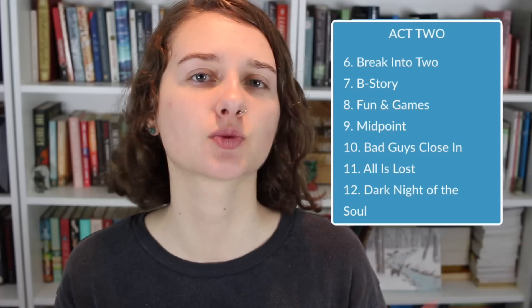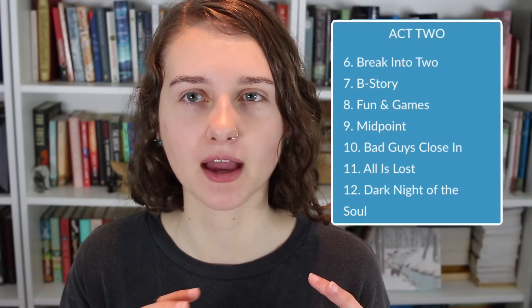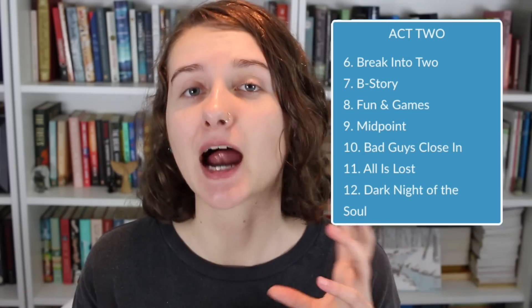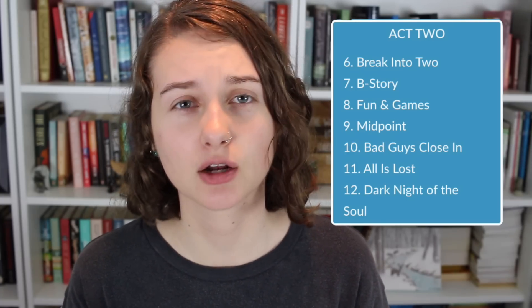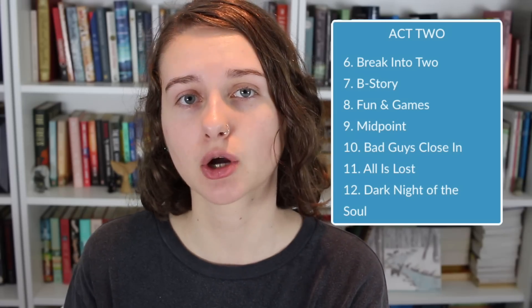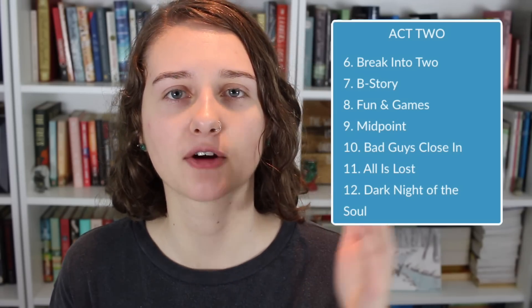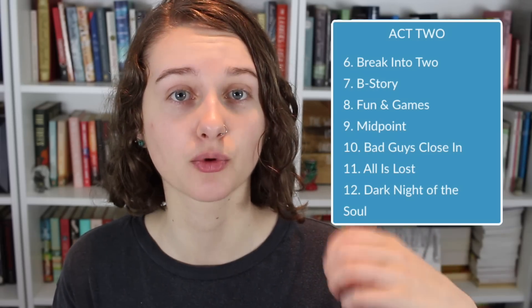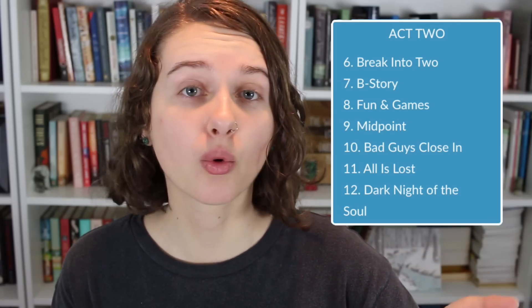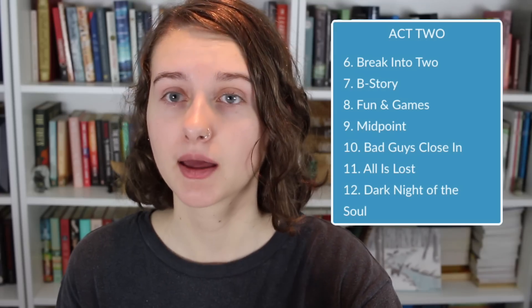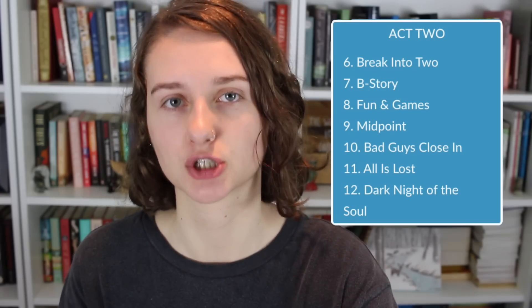After that is the longest beat in the story and that's the promise of the premise, also sometimes known as fun and games. Fun and games is where we see the premise play out — basically when you read the back jacket, what you think the main conflict of the story is going to be. That plays out in the promise of the premise. After that is the midpoint, which is basically a turning point. The midpoint is often either a moment of false hope or false defeat. If it's false hope the character will think they've achieved their goal but then realize they haven't, and the story will continue. Or they will think they failed completely and then find new hope and realize there's still a chance.